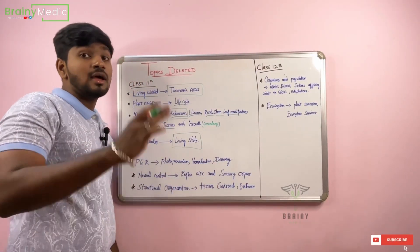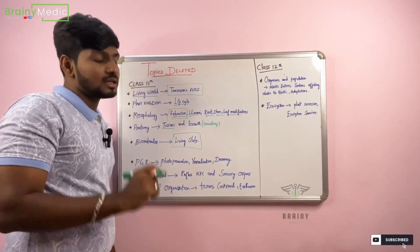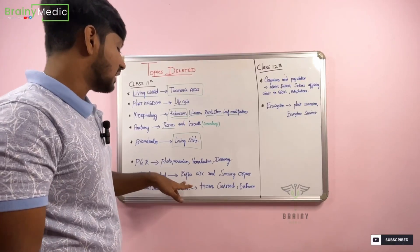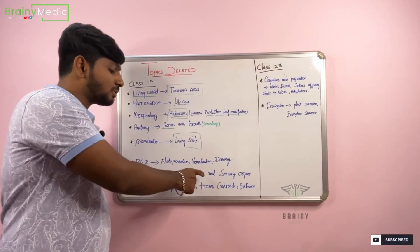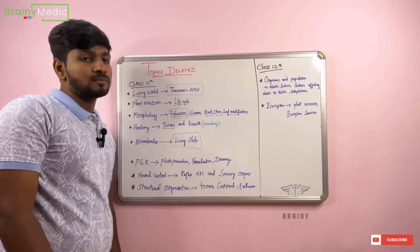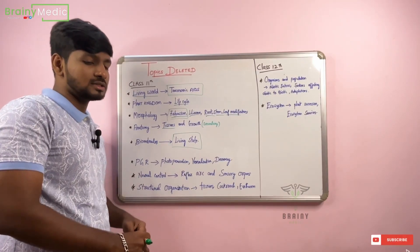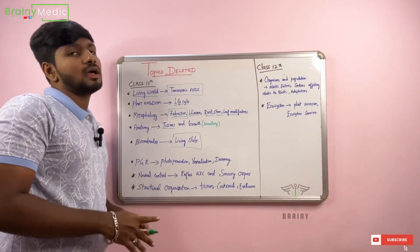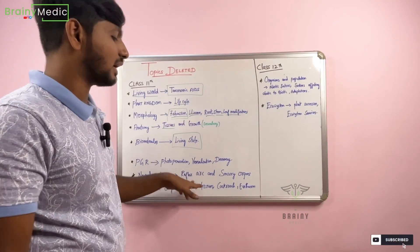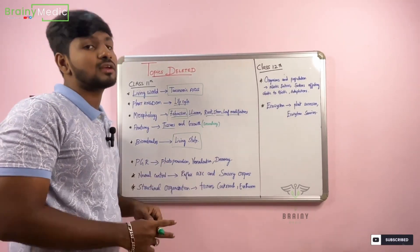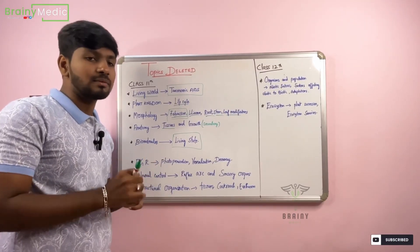Next, Neural Control and Coordination. In 11th NCERT, Reflex Arc and Sensory Organs are covered. Neurons are discussed. Reflex Arc and Sensory Organs include Eyes and Nose as examples.